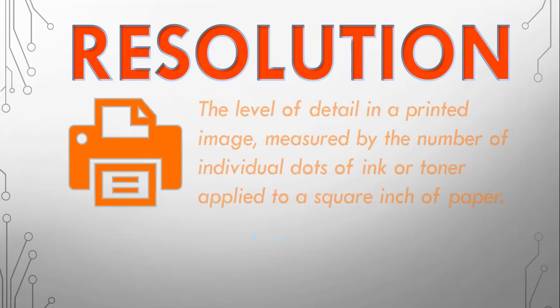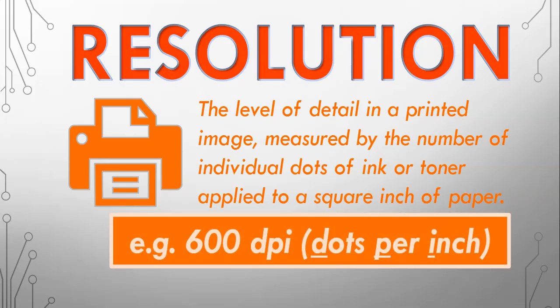In printers, we're looking at the level of detail in a printed image and it's measured by the number of individual dots of ink or toner that are applied to a square inch of paper and the measurement is dots per inch. In this case, we've got 600 dots per every inch.